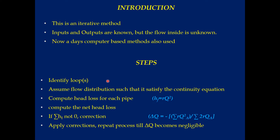When using the Hardy Cross method, there are a number of steps. The first step is to identify loops. Then we have to assume flow distribution such that it satisfies the continuity equation. Then we compute the head loss for each pipe using the formula h = RQ². Then we compute the net head loss. If the net head loss is not equal to zero, we apply a correction using the formula ΔQ = -ΣRQ² / 2ΣRQ. We keep repeating iterations until ΔQ becomes negligible.